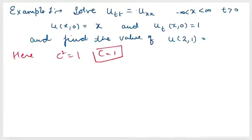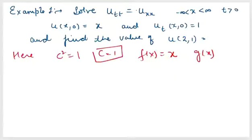We need f(x), which comes from u(x,0), so f(x) = x. We need g(x), which is the velocity part — wherever you see the time derivative, that is our g function — so g(x) = 1. Whenever you see a wave equation where x ranges from −∞ to ∞, you can apply D'Alembert's solution, whether the word 'D'Alembert' is written or not.